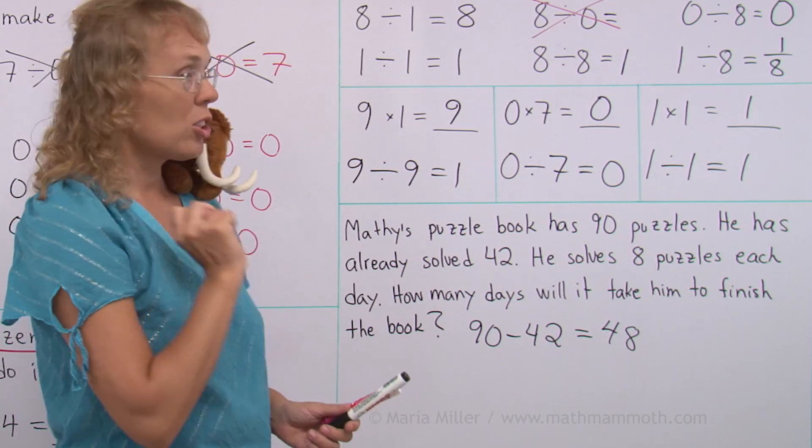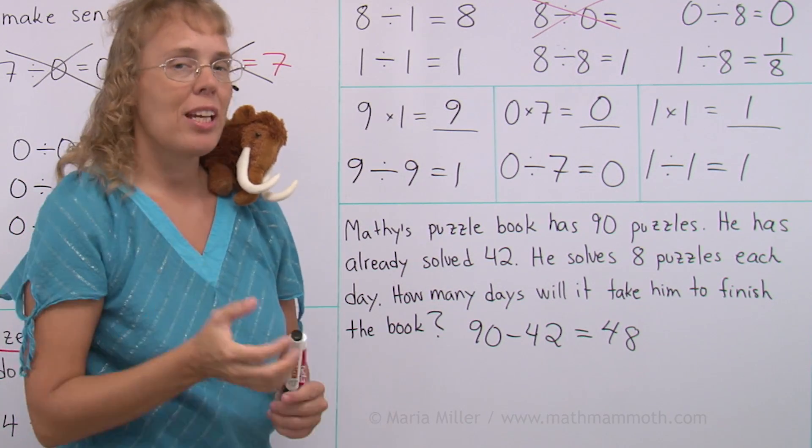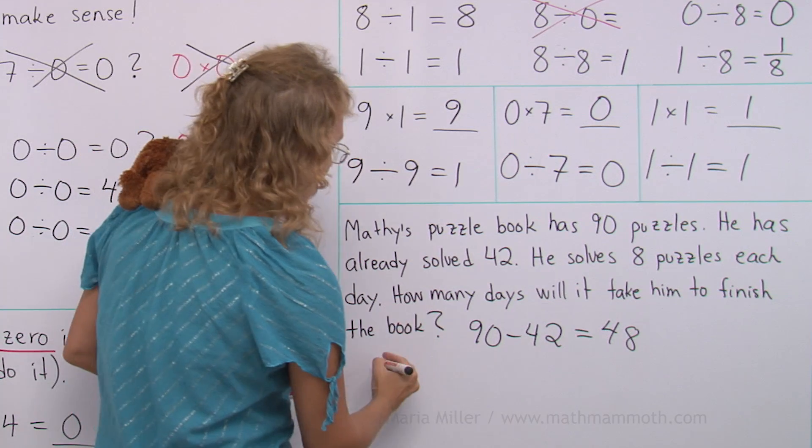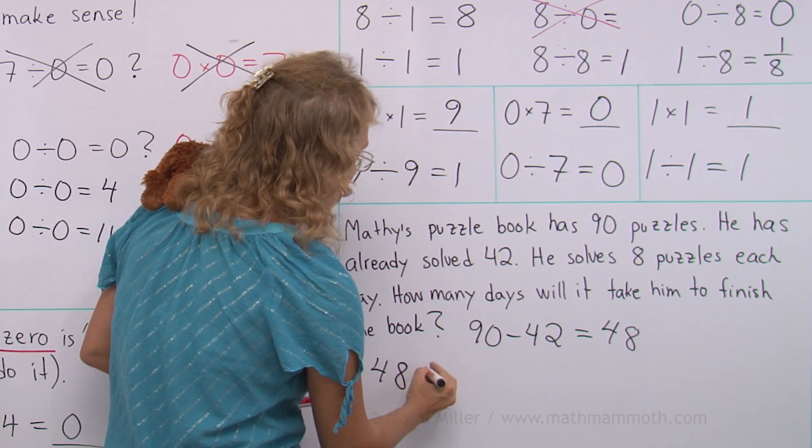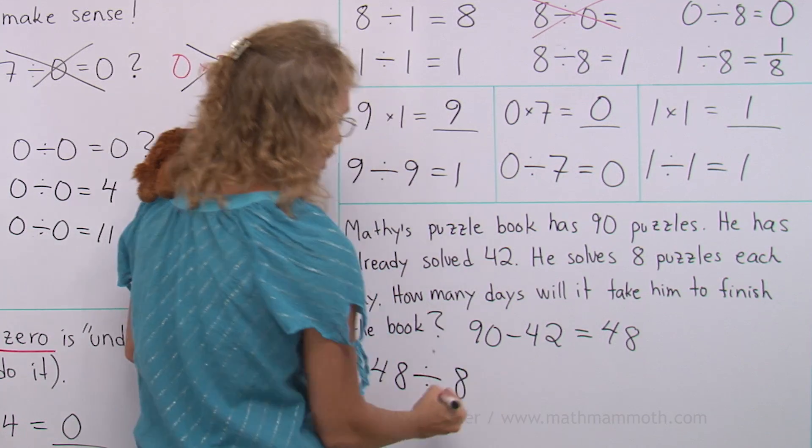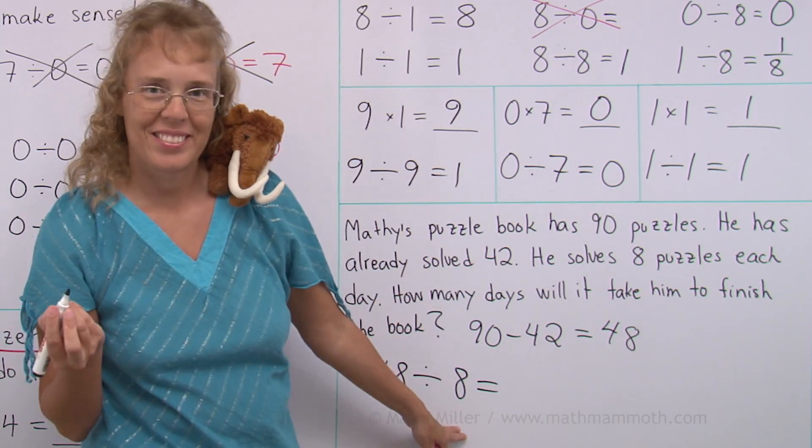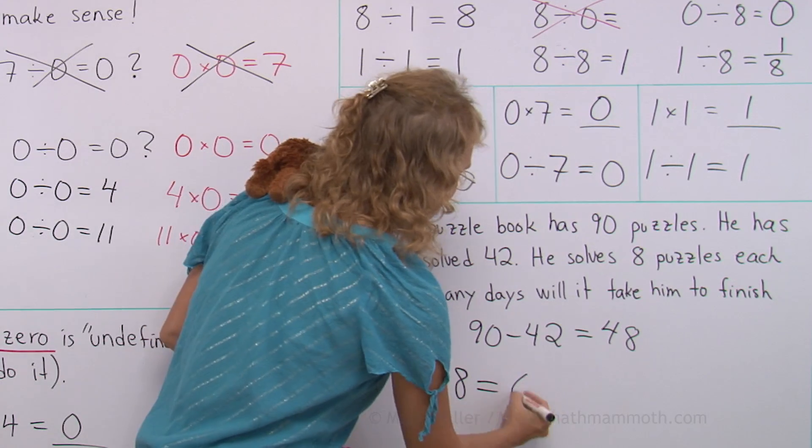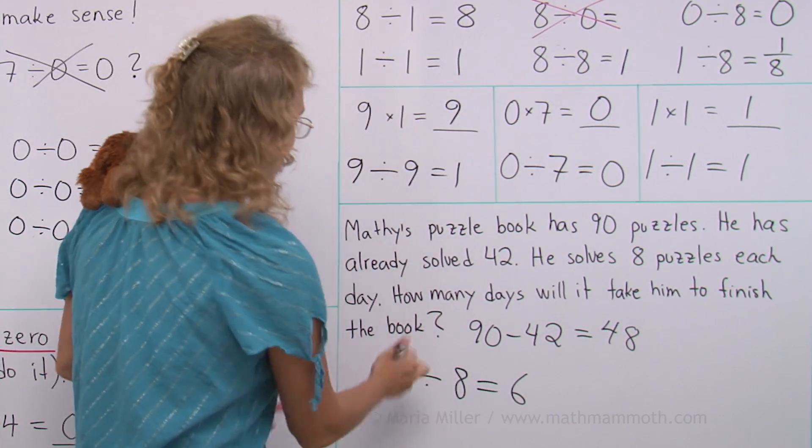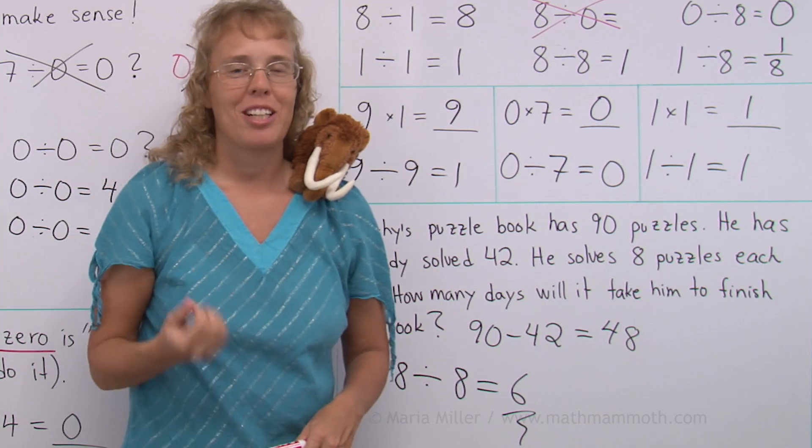And he's gonna solve eight puzzles each day from now on. So how many days will it take him to finish the book? 48 puzzles to solve. Eight puzzles each day. Just think of your multiplication tables. Or write a division. Actually, you can think of it as division. 48 puzzles and then eight puzzles each day. And what do we get? Six, yes. Because six times eight equals 48. Six days more fun for Matthew. Okay. We're all done with this lesson.